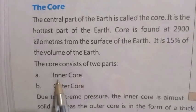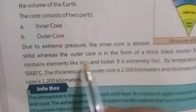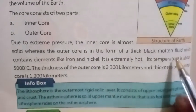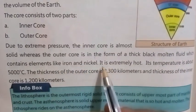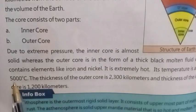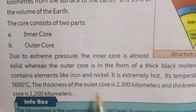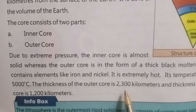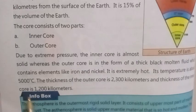Part A: inner core. Part B: outer core. Due to extreme pressure, the inner core is almost solid, whereas the outer core is in the form of a thick molten fluid which contains elements like iron and nickel. It is extremely hot — its temperature is about 5,000 degrees centigrade.